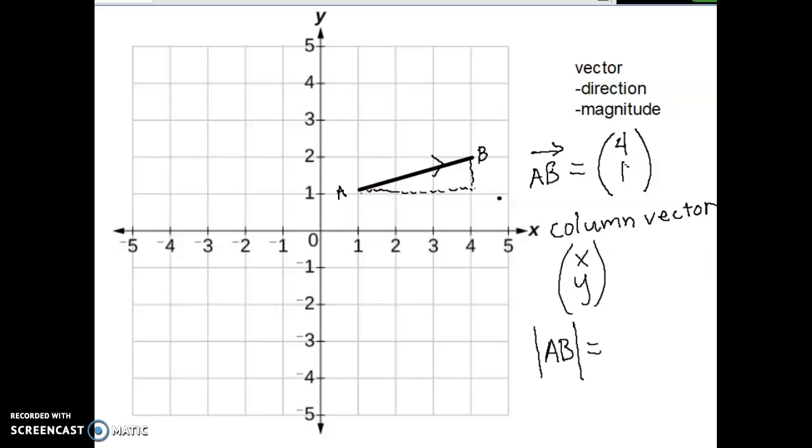By the way, this is important to note that the magnitude is written like this, with these two lines, so with AB in the middle. So the magnitude of this particular vector is the square root of 5, or 2.23, but we're just going to call it the square root of 5.